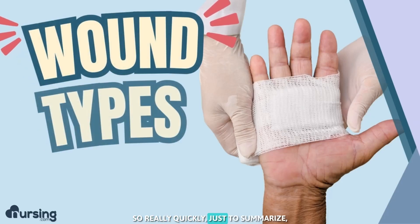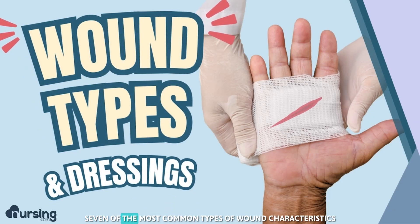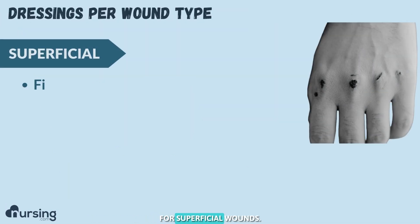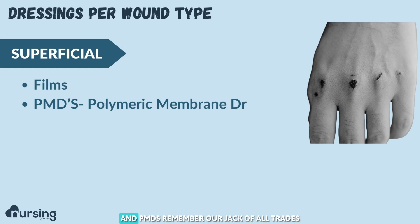Just to quickly summarize what types of wounds require what types of dressings, let's go through seven of the most common wound characteristics. For superficial wounds, we like simple films and PMDs — remember, our jack of all trades.